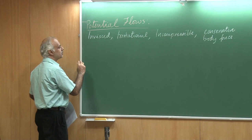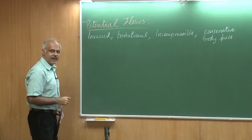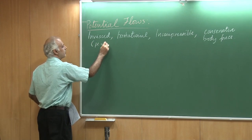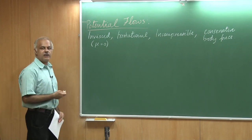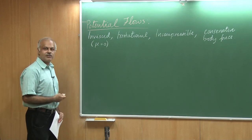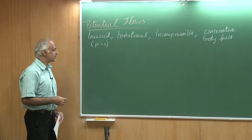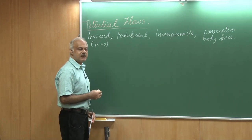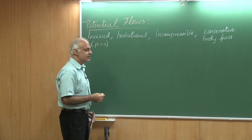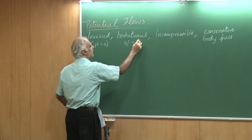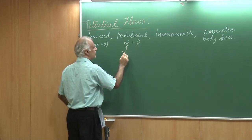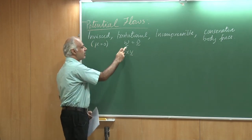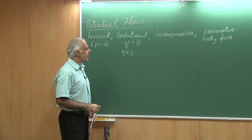Let us look at each attribute more closely. Inviscid essentially means frictionless flow - the viscosity of the fluid is zero. This is absolutely hypothetical; there is no fluid which has zero viscosity, so this is really an idealized situation. Irrotational means a flow has zero vorticity everywhere - the curl of the velocity is identically zero everywhere. This implies omega is zero, and omega is the curl of the velocity field. This is also synonymous with the circulation being zero.